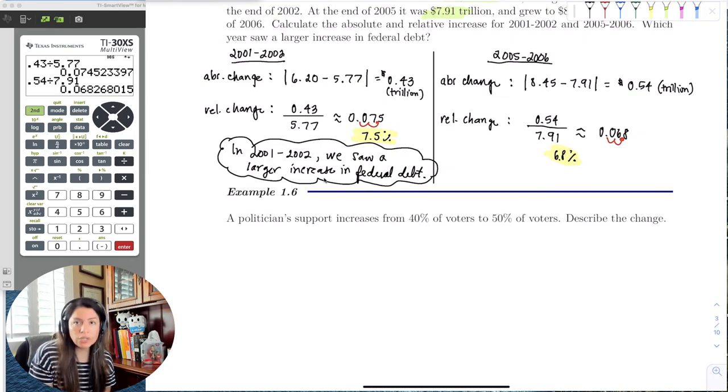Let's say a politician's support increases from 40% to 50% voters, describe the change. There's two ways we can describe the change, right? We can describe the absolute change, right? Just the percent difference, right? And we can also find the relative change. So let's do that.